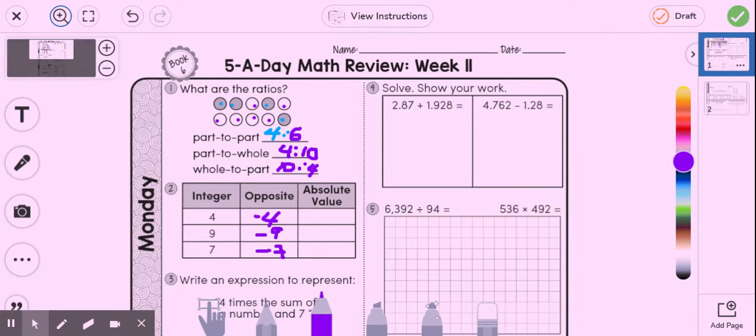And then remember absolute value is just what is the distance of the integer from zero. So the absolute value of four is simply four. The absolute value of nine is nine. The absolute value of seven is seven.